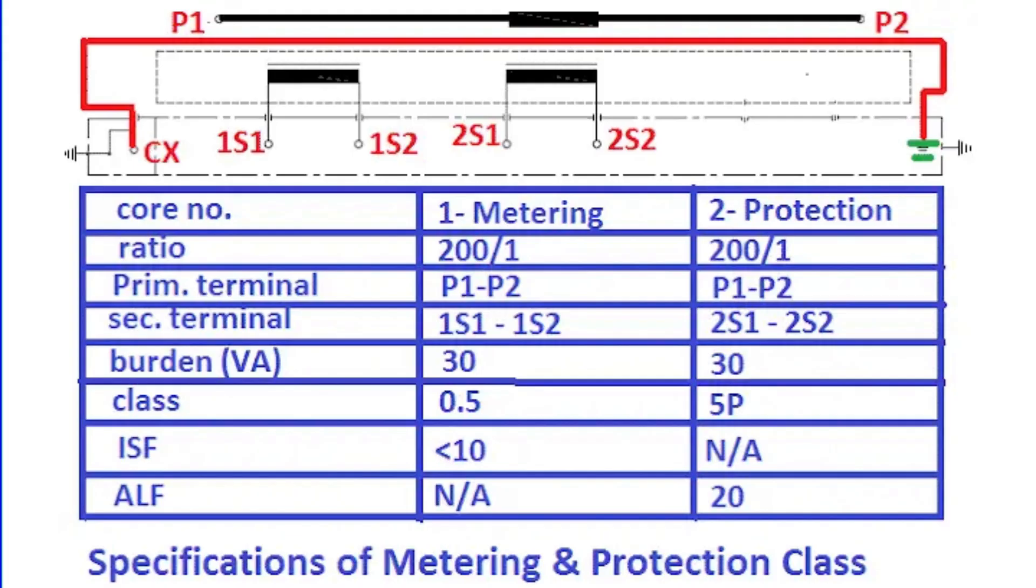For instance, if the ISF is 3, the CT core saturates when the primary current exceeds 3 times the rated current, limiting the secondary current to safeguard the connected meters.